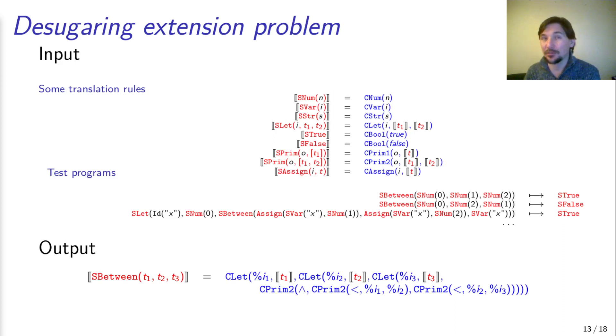Let's see an example for a desugaring extension problem, the step in which we learn the translation rule for the s-between construct. The translation of literals, primitive operations and assignment is already fixed. This example shows the most common case, where only one translation rule is synthesized. In our case studies, we had a few two-element groups and one three-element group.